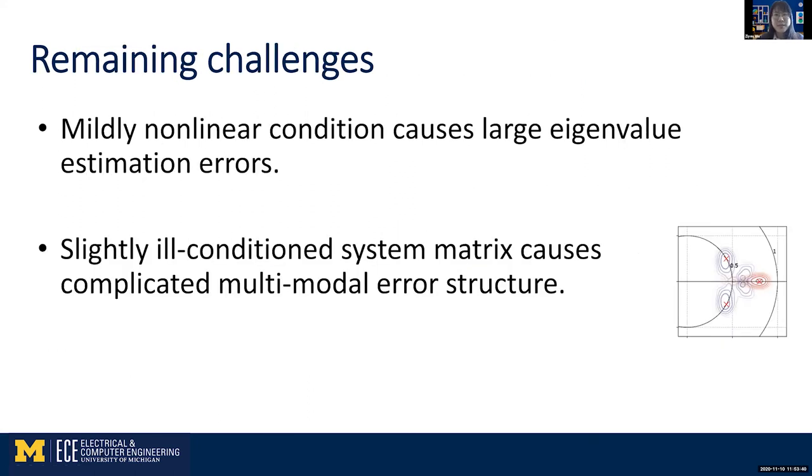And in the end, as we've seen before, the nonlinearity introduced in this project is only a second-order monomial observable, so it's very mildly nonlinear conditions. But it caused a very large eigenvalue estimation error. And the perturbation we gave to the eigenspace is just making the system matrix slightly ill-conditioned, but it also caused complicated multi-modal error structure. So these are some remaining challenges for Dynamic Mode Decomposition to tackle in the future.